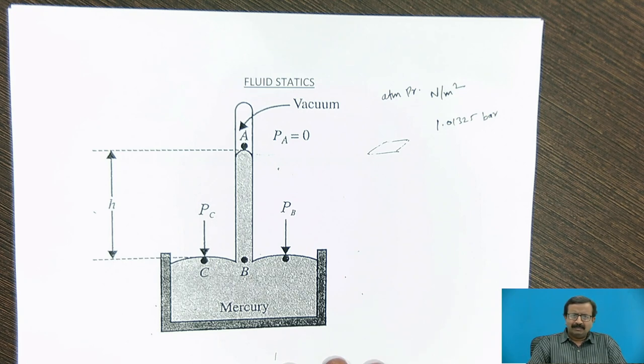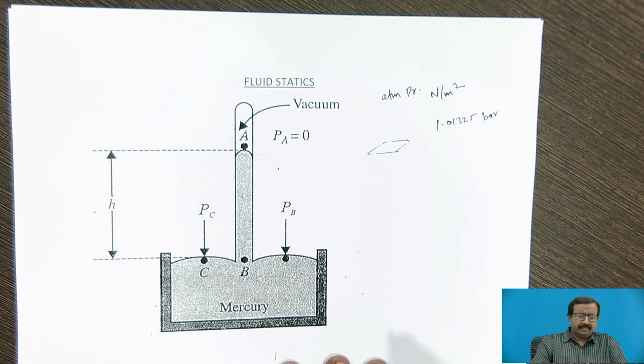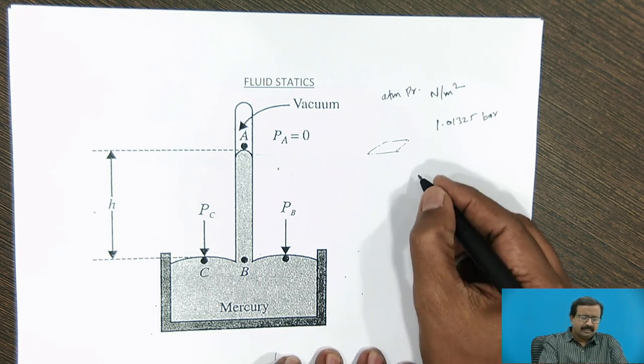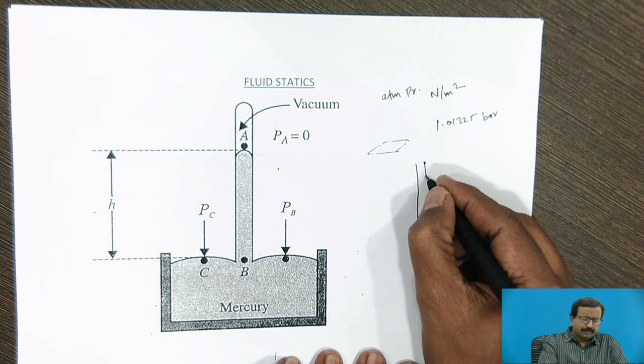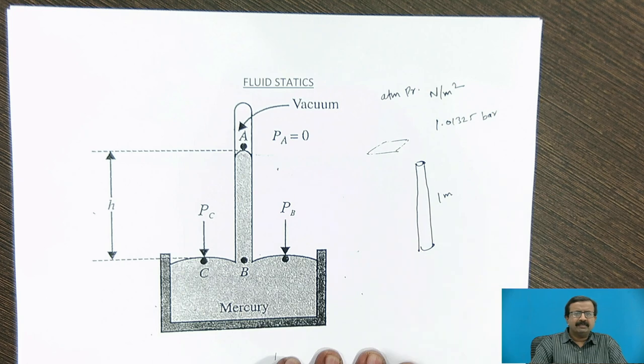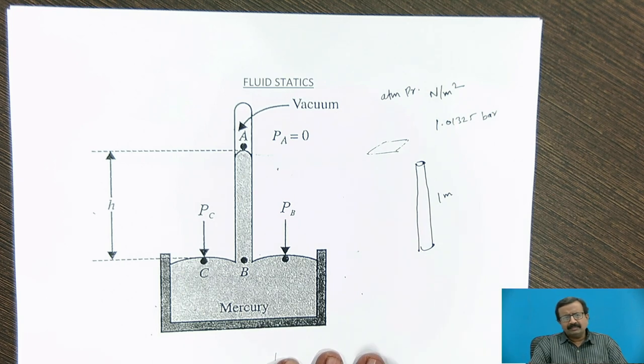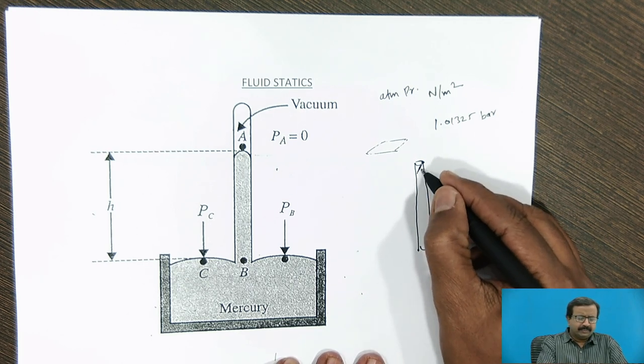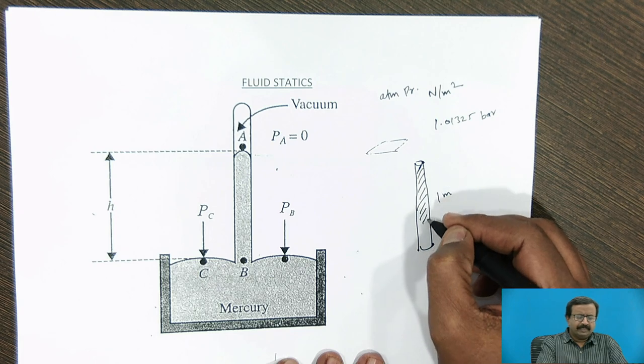Its construction is simple, functioning is very beautiful, and that will give the clear idea and feel that how atmospheric pressure acts on a particular surface. Now this particular barometer was invented by Torricelli. And let us see how it is measured. First of all, take a tube of approximately one meter length. Now why one meter? That I will tell you after some time. If you take one meter length, completely fill it with mercury.